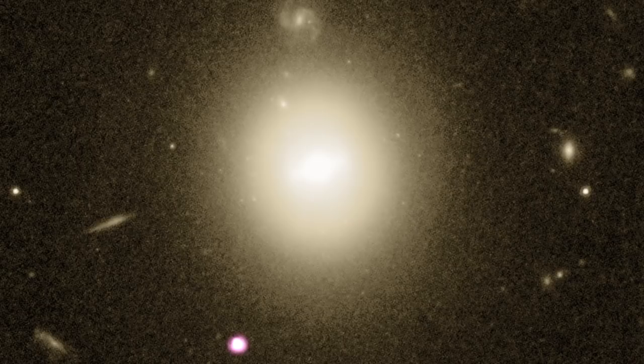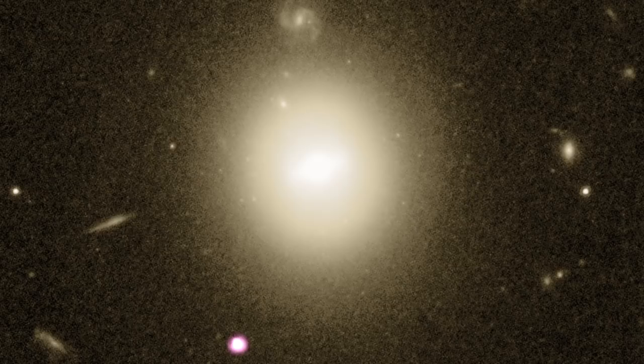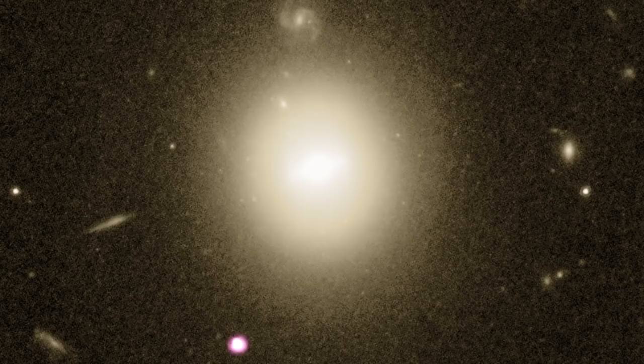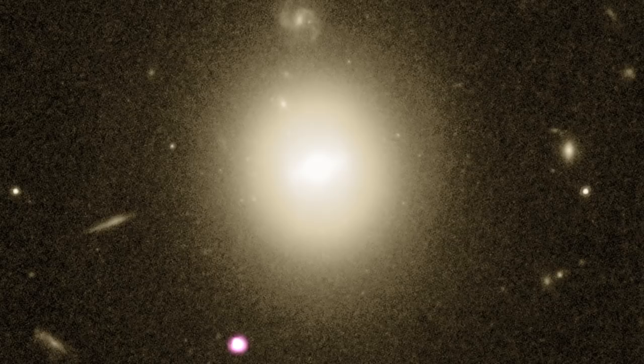Those between a few hundred solar masses and hundreds of thousands of times the mass of the Sun. Often hypothesized to be the seeds that eventually grow to become supermassive, these intermediate sized black holes are especially elusive, and very few robust candidates have ever been found.